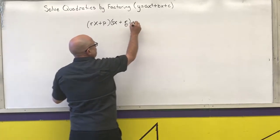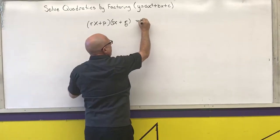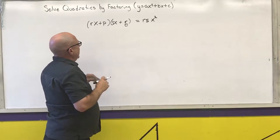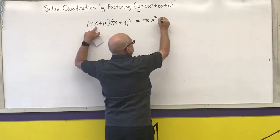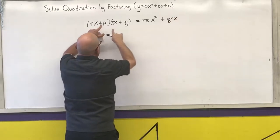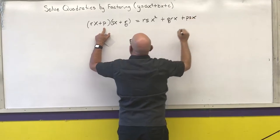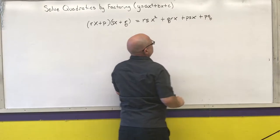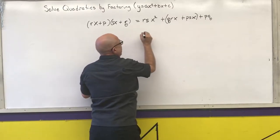If I multiply these out, first is rs times xx, which is rsx squared. Then the outers: qrx, then psx, then pq. And I can factor out the x out of that middle section.